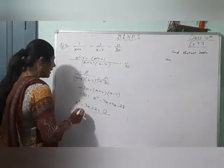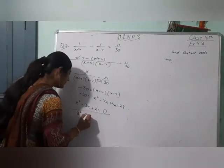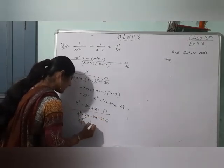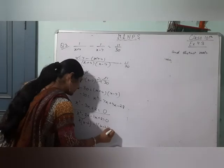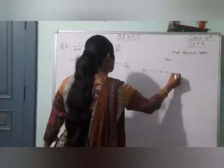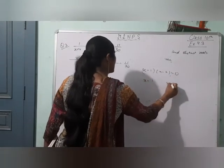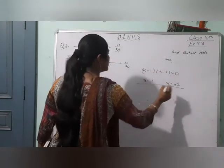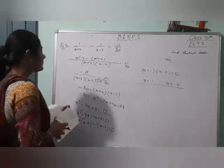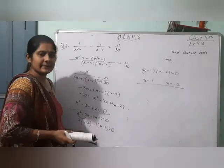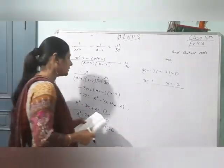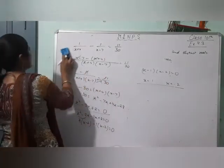It will be easy if we do factorization. Taking x common: x(x minus 2), minus 1 common: (x minus 2). So we get (x minus 1)(x minus 2) equals 0. Therefore x equals 1 and x equals 2. Dono positive hai. x equal to 1 and x equal to 2 is the answer. The factors easily ban jaate hain, so factorization lagaate hain; nahi toh quadratic formula use karte hain.